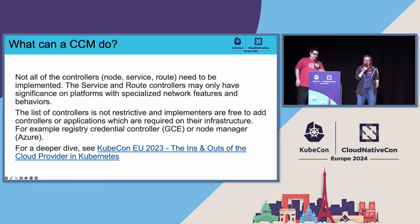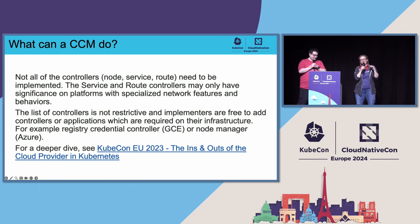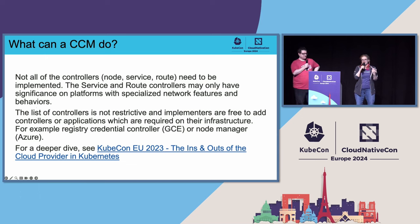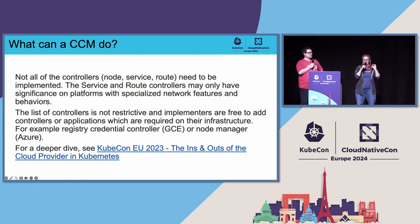There's more that a CCM can do. Not all controllers need to be implemented — for example, service and route controllers depend on what the cloud provider offers in terms of networking. You can also add controllers specific to your infrastructure. For example, the registry credential controller was more necessary for GCE, or Azure needed a node manager. The in-tree code base is absolutely enormous, which is a reason we're moving out of tree.